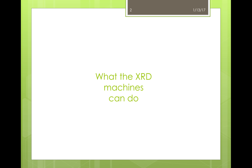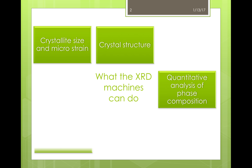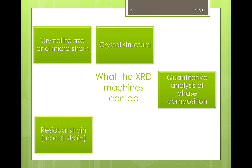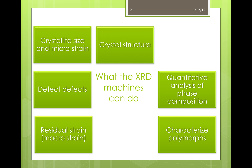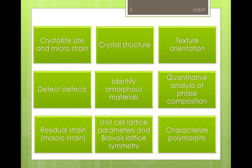So what do X-ray diffraction machines do? These machines are incredibly powerful and can be employed to run many different types of analysis. Some of the most common uses for XRD machines include analyzing the crystal structure and even performing quantitative analysis of phase composition. It is used for finding the crystallite size and microstrain, but it can also look at the strain on a macro scale known as residual strain. XRD can identify defects in samples and it's used to identify and characterize polymorphs. Texture orientation can be found, and unit cell lattice parameters and Bravais lattice symmetry can also be analyzed. Not only can it be employed to analyze crystalline materials, but it's also frequently used for its ability to identify amorphous materials.